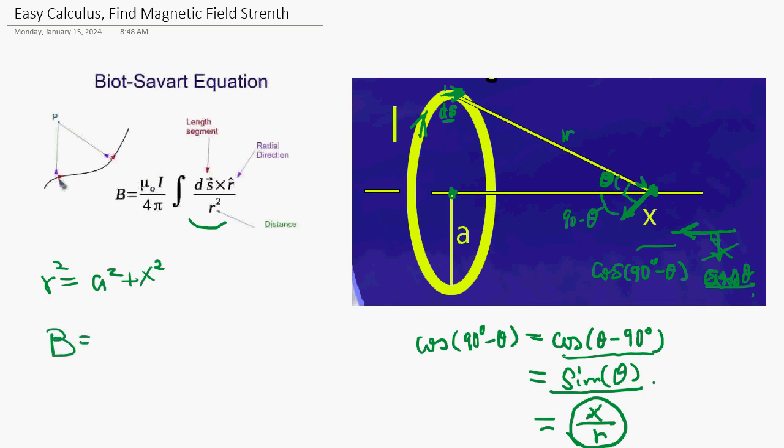So magnetic field is μ₀I/(4π) times 1/(a² + x²). And this component ds vector integration we change to scalar because now we take only one component. And this integral is going to be 2πa conveniently. And the remaining integral is going to be x/(a² + x²).